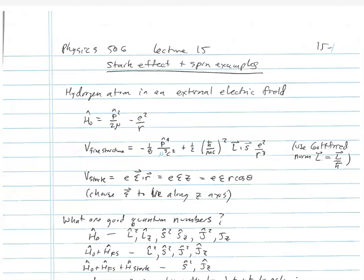Welcome to lecture 19. This is a lecture where we're going to be talking about some more degenerate perturbation theory examples. We're going to cover the Stark effect for the hydrogen atom — that's the hydrogen atom in an external electric field — and we're going to give a spin example of perturbation theory as well.